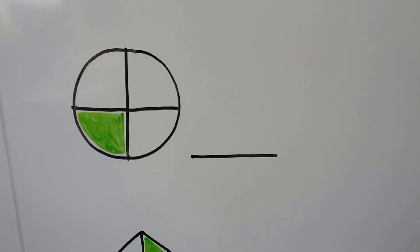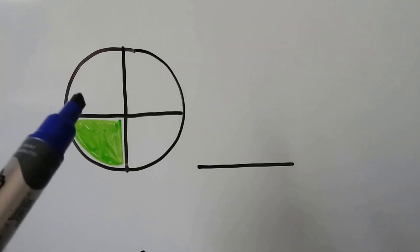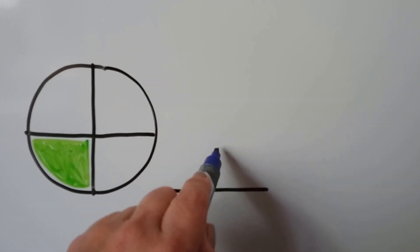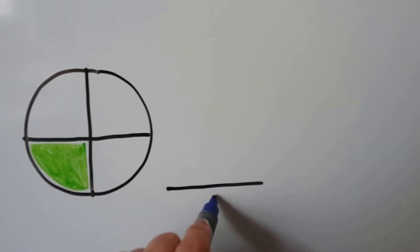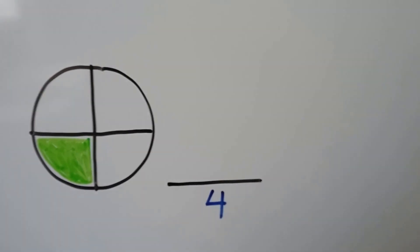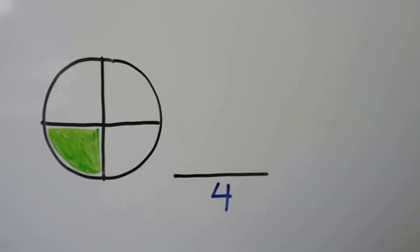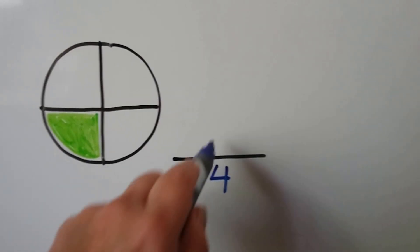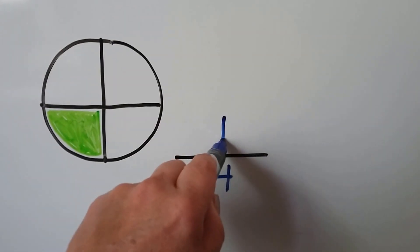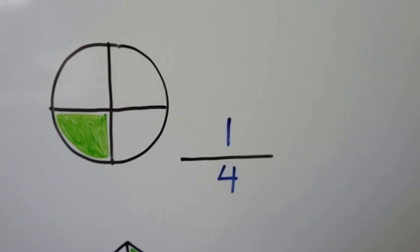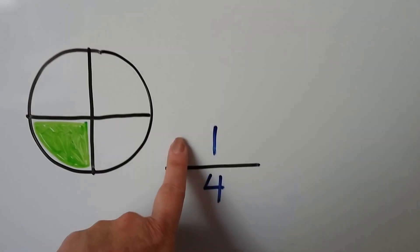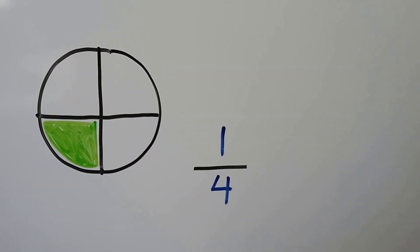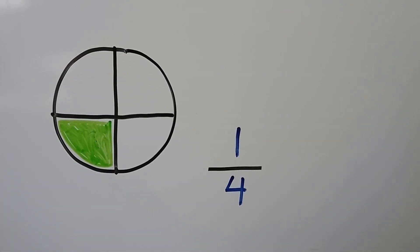We have half — half is green. We could even say half is white. Now look at this one — how many equal parts are there? One, two, three, four equal parts. So we put four under the fraction bar. How many parts are green? One. So we have one fourth — one fourth is green.